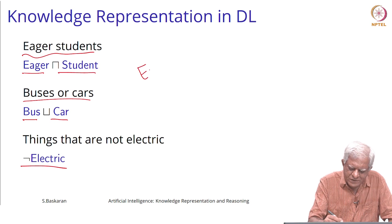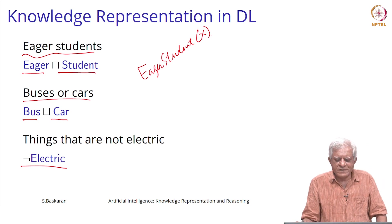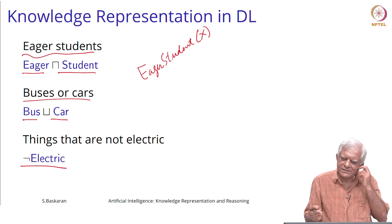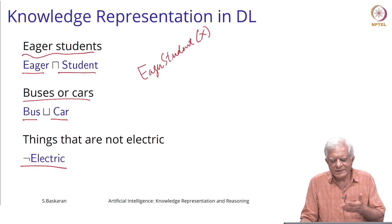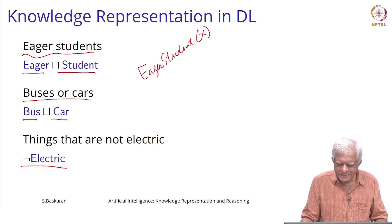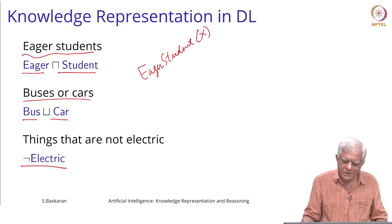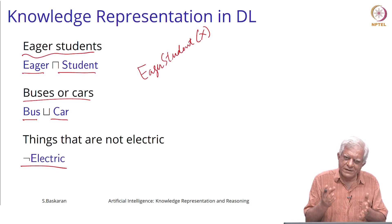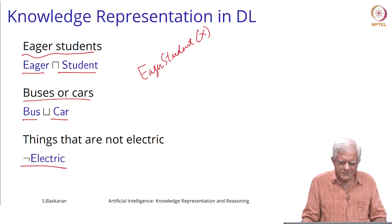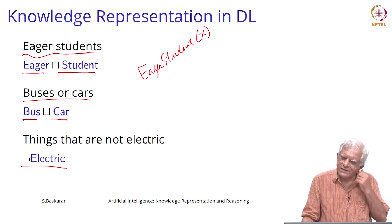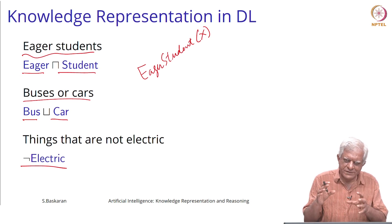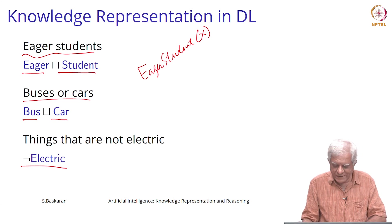Simply saying in first-order logic that we have a predicate called 'eager student(x)' does not mean anything. In first-order logic a predicate name is meaningless in the sense that the interpretation depends on you — what do you mean by that predicate, what particular subset of the domain you are talking about. But in description logics we define some primitive concepts and then define new concepts in terms of those concepts, and we assume the primitive concepts are defined in some namespace so it should be clear to anyone reading that document.